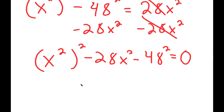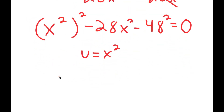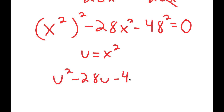Now I'm going to set u equal to x squared. So I get u squared minus 28u minus 48 squared is equal to 0.